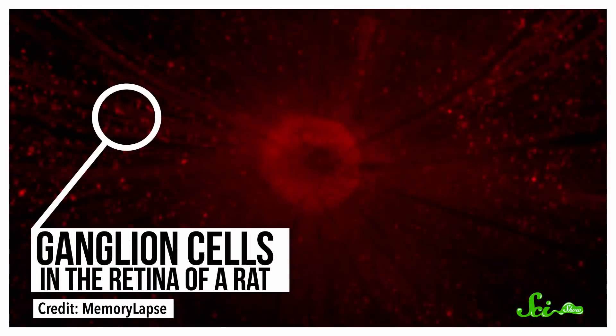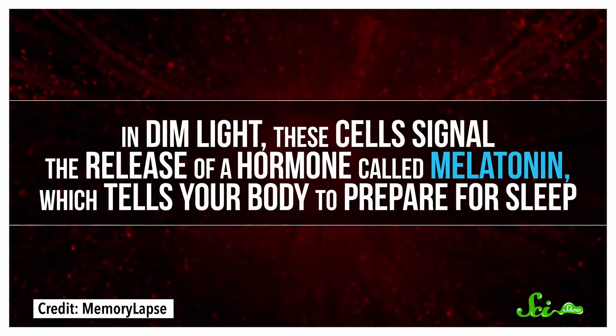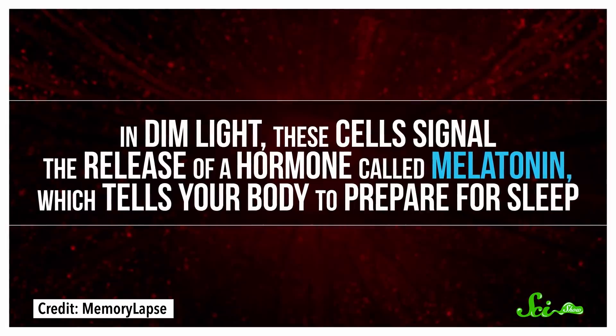Your body's internal clock, or circadian rhythm, is regulated by a type of neuron in your eyes called ganglion cells. In dim light, these cells signal the release of a hormone called melatonin, which tells your body to prepare for sleep. It makes your metabolism slow down, your body temperature drop, things like that.